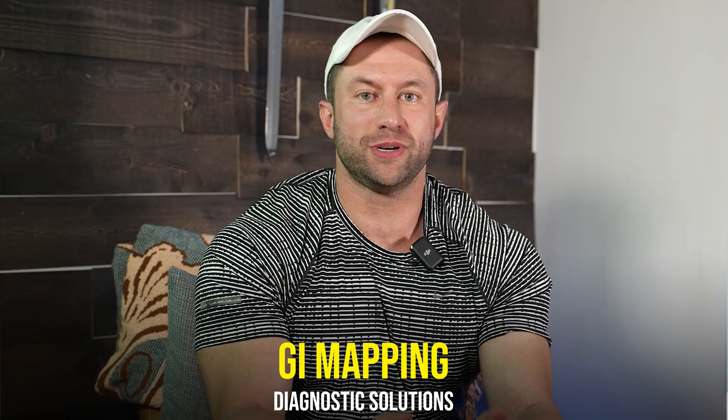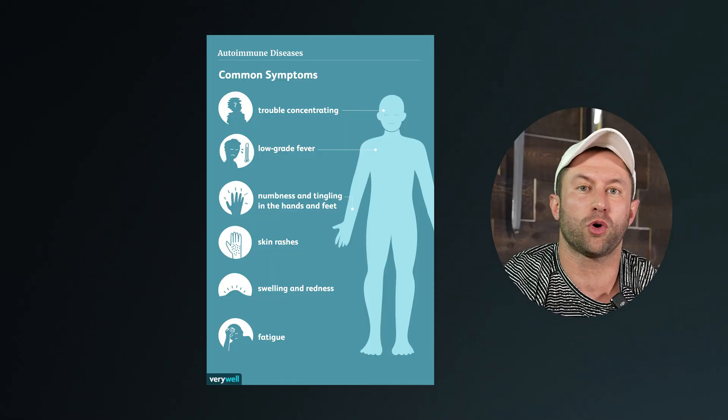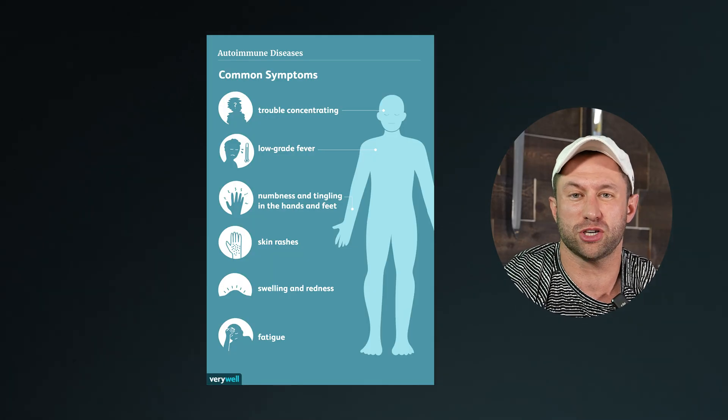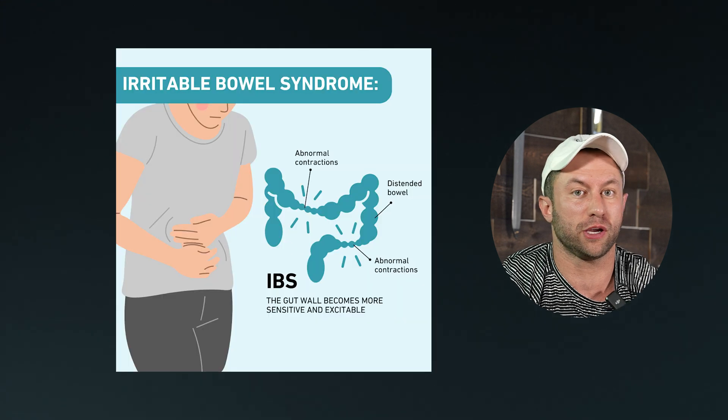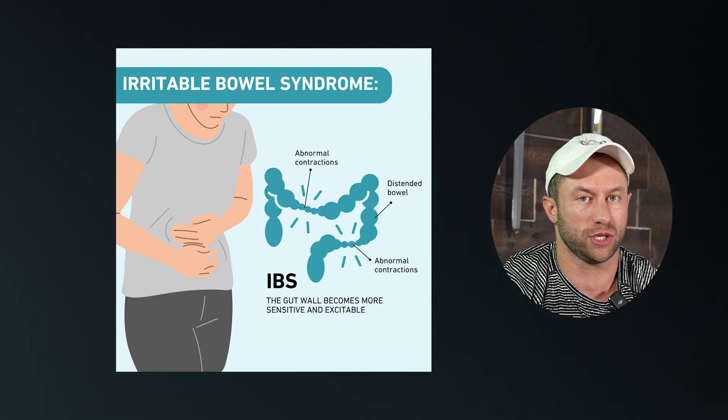The test that I personally really like is GI Mapping from Diagnostic Solutions. It tests for zonulin, which is leaky gut. It even tests for things like immunoglobulins, which can be an indicator for if you're having an autoimmune flare-up, or maybe you need further testing for an irritable bowel disease, which is much more serious.